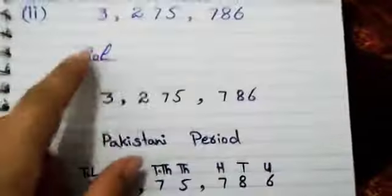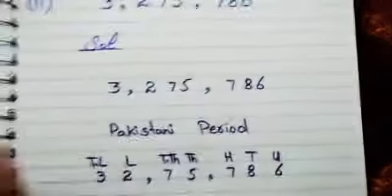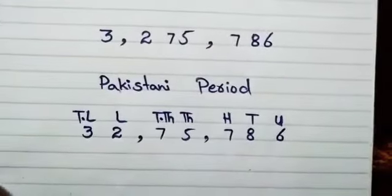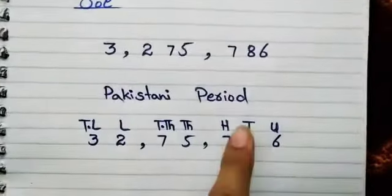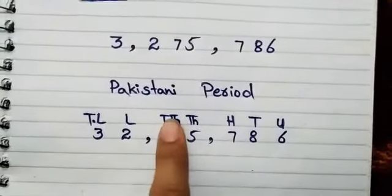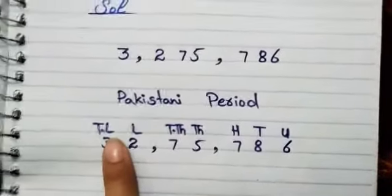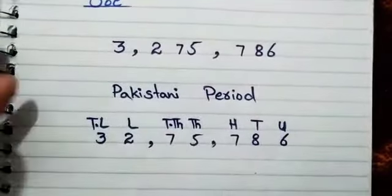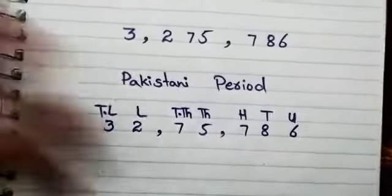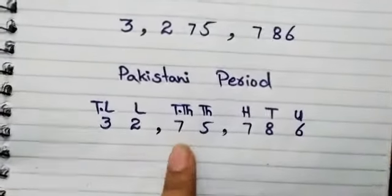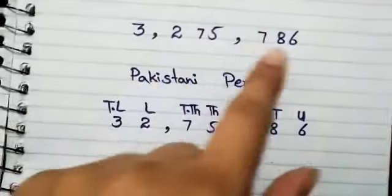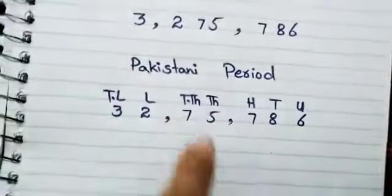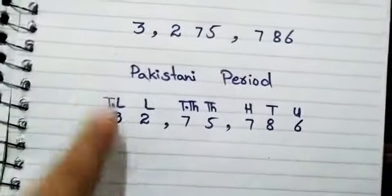Question number 2: 32757786 — international period is given here and we will change it to Pakistani periods. Unit: 100,000, 100,000. Unit period will be the same in both Pakistani and international periods. So unit period first, then thousand periods, then lakh periods. We have 6, 8, 7 as unit period. Then 5, 7, 2 as a group and 2, 3 as a group.